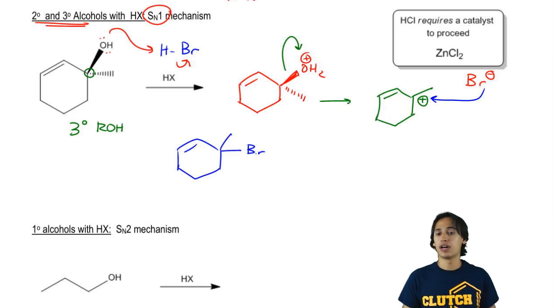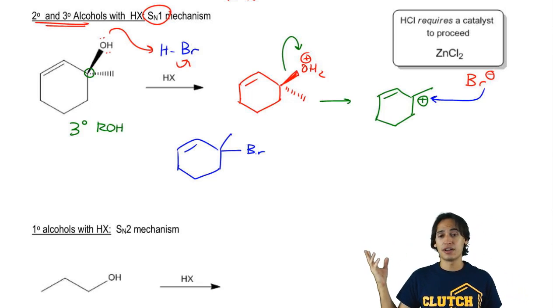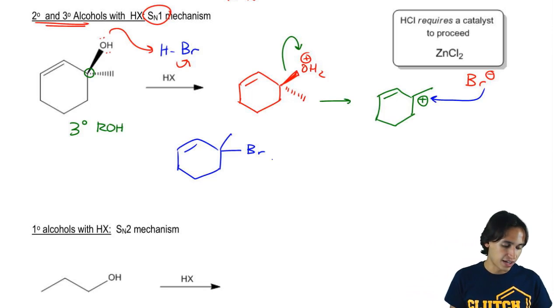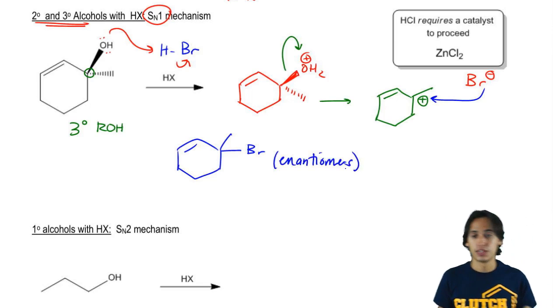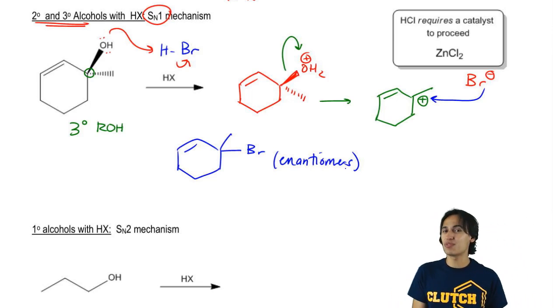Now, one note, I purposefully didn't include stereochemistry here. The reason is because I don't know which side it's going to attack. It can attack the front or the back. So technically you're going to get enantiomers from this attack. You're going to get a Br in the front and a Br in the back. But typically that doesn't really matter too much because we're going to be usually making this leave anyway later.